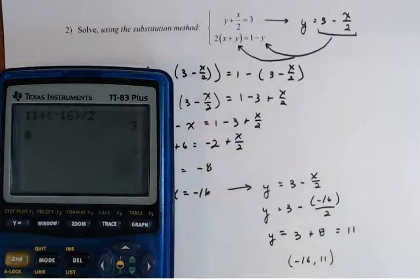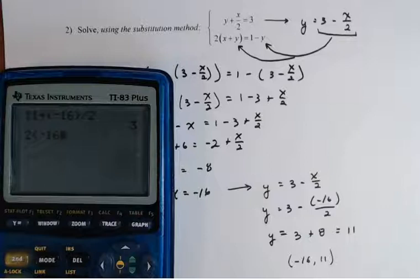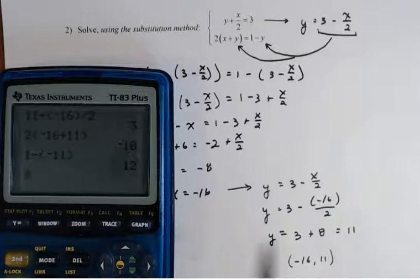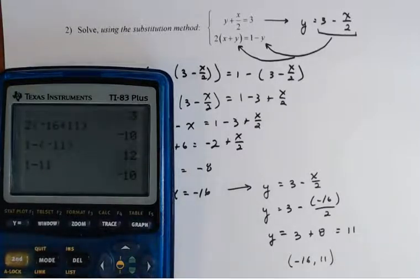Plug this into the second equation. So two times negative 16 plus 11, that gives me 10. And on the other side, I have one minus negative 11, and that gives me 12. That's not good. It shouldn't be minus 11, it should be plus 11. So I should redo the last one. I should have one minus 11, which gives me negative 10. There you go. So it checks.